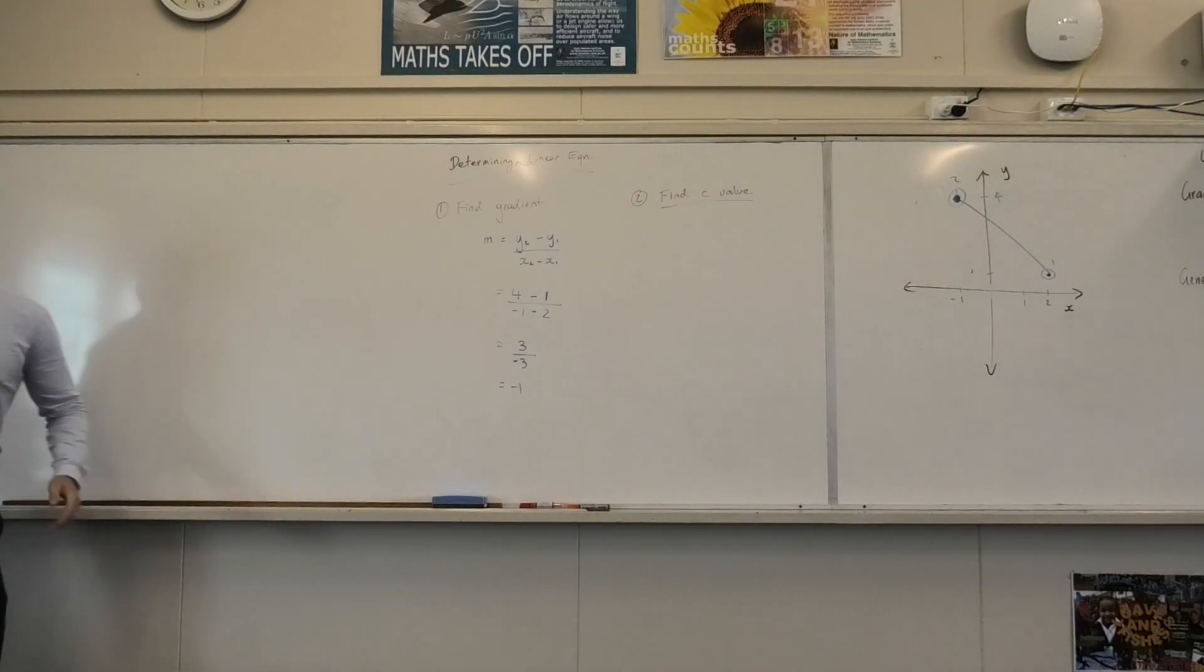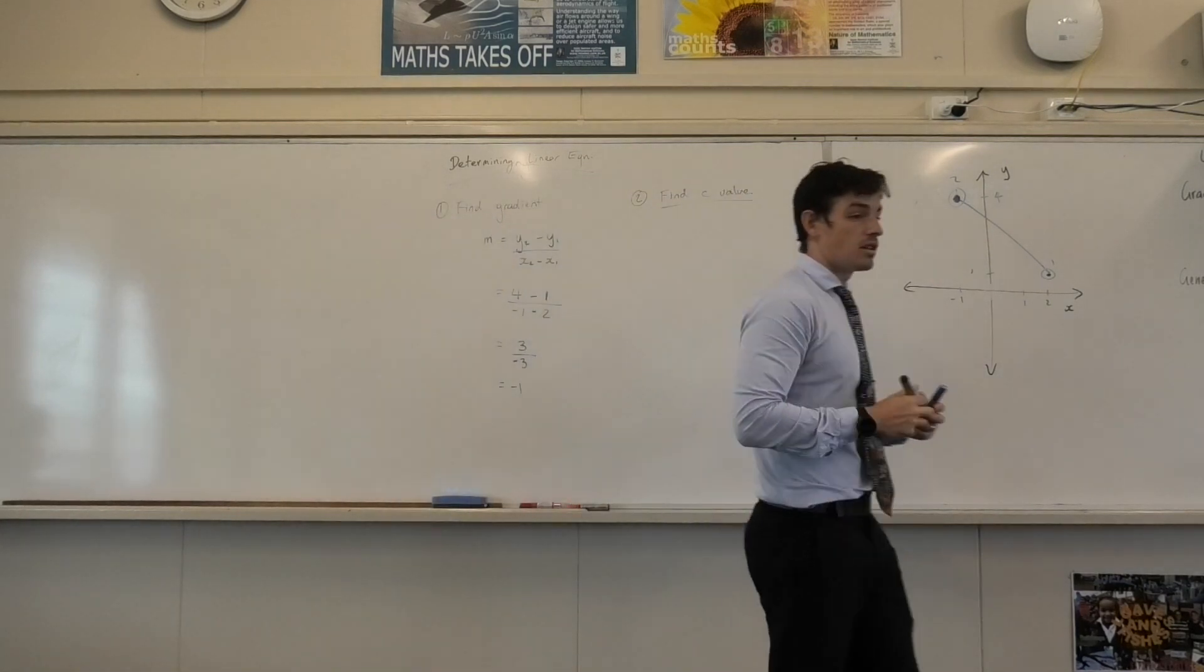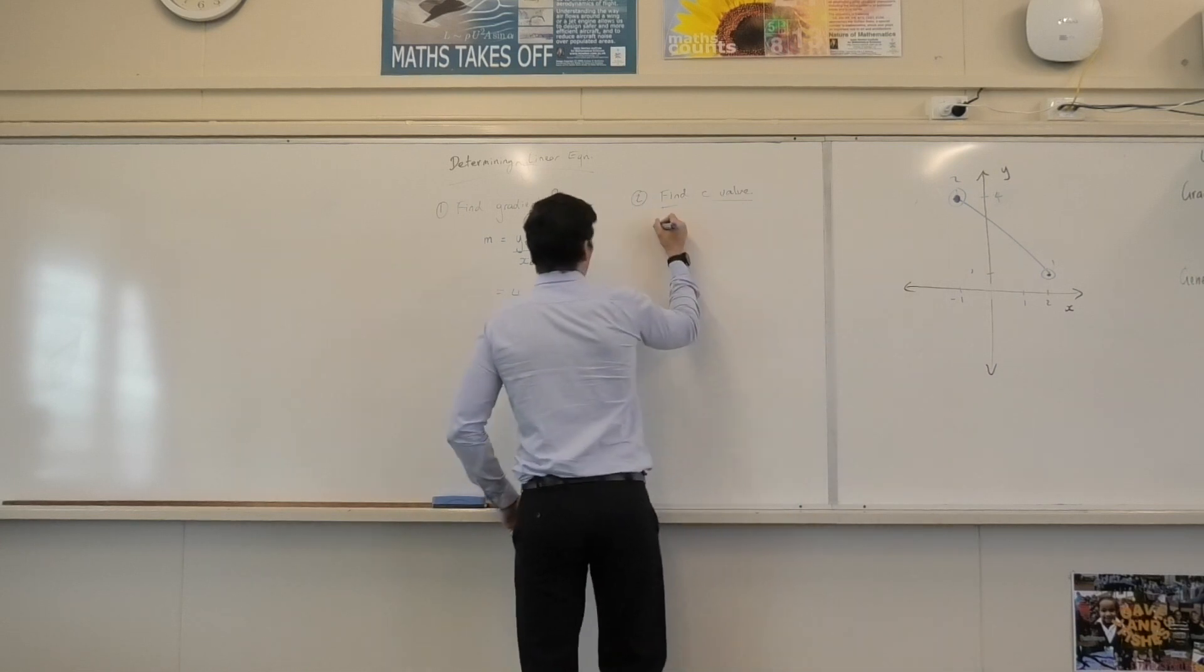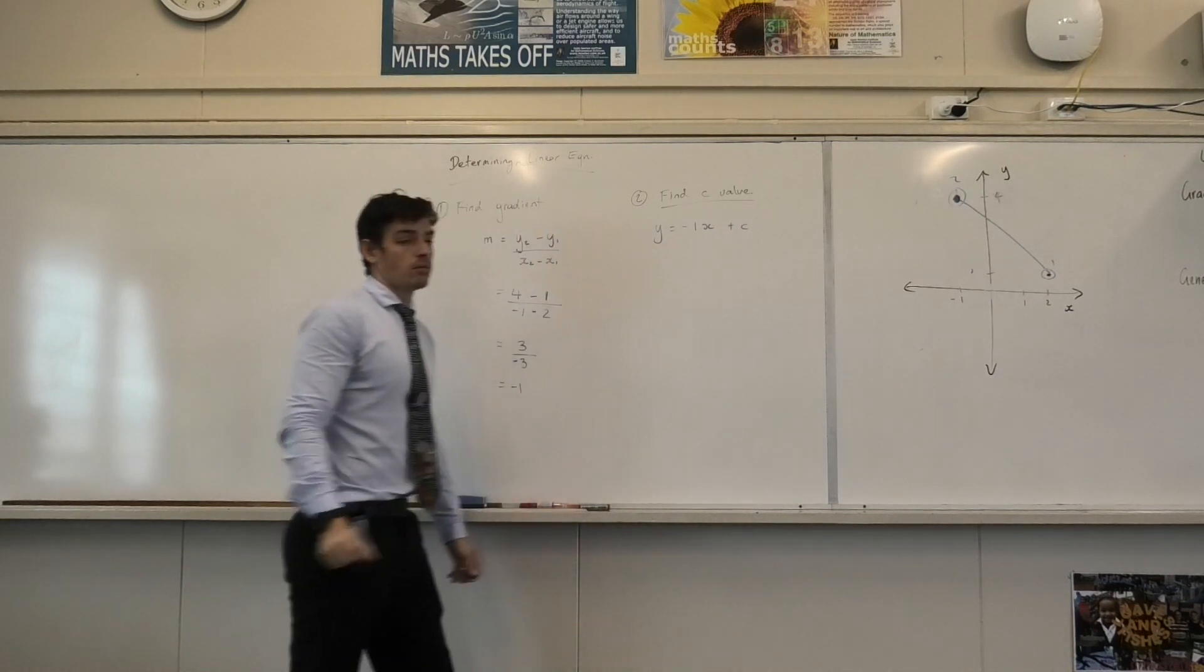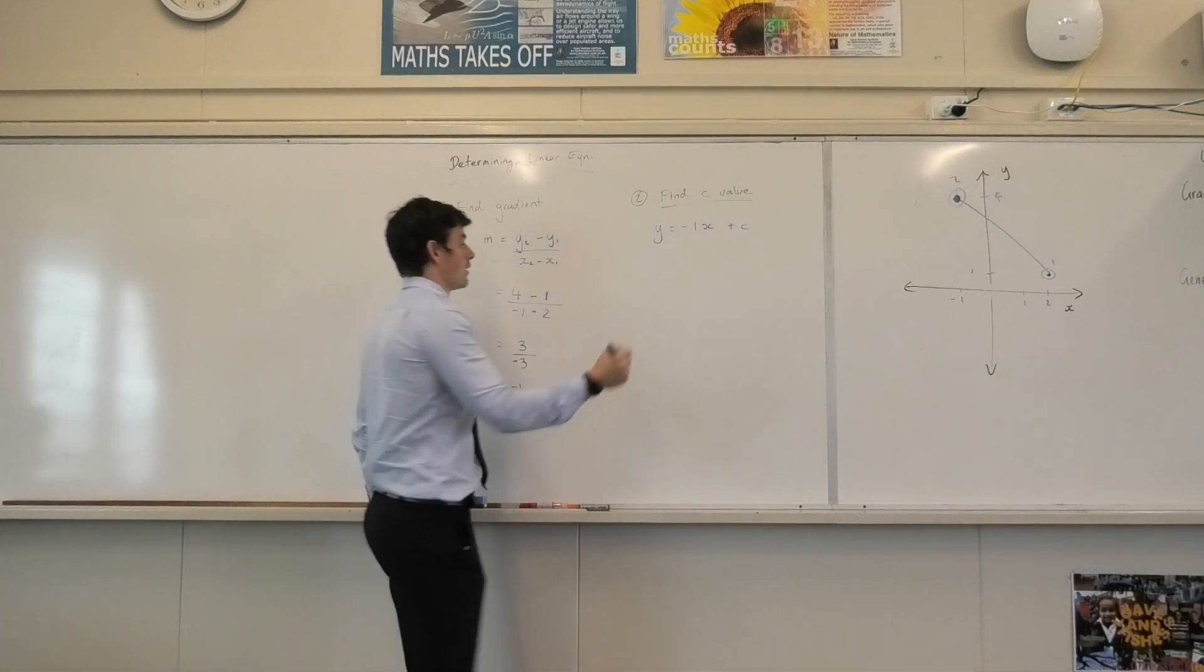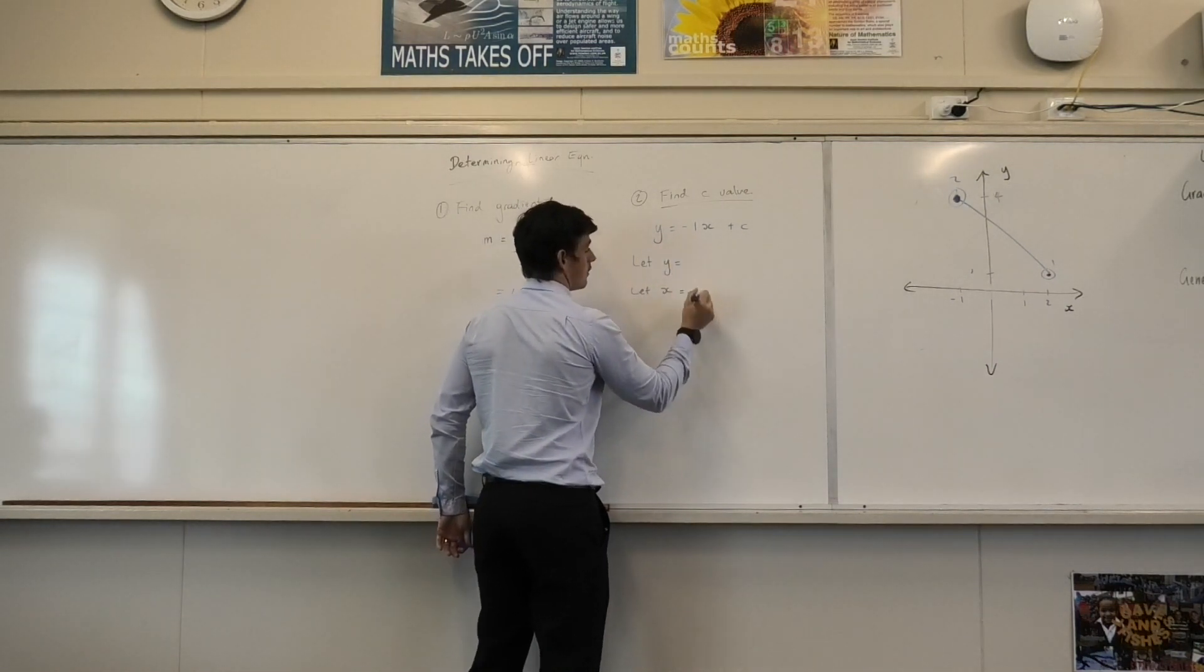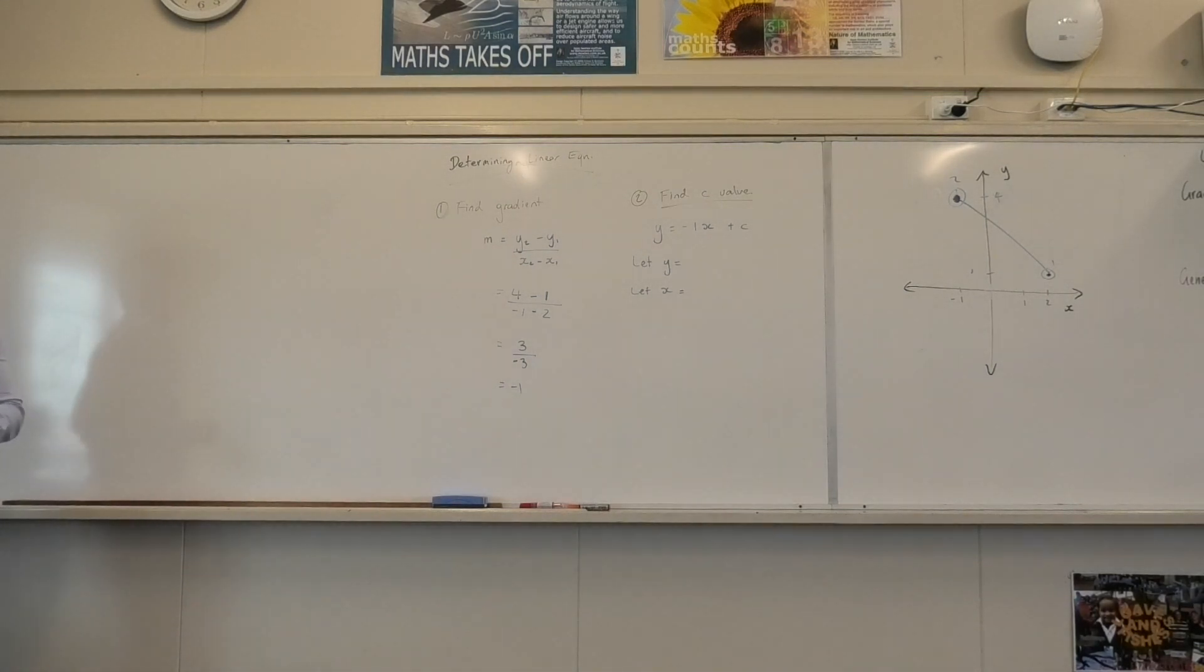What do I do if I know three things and don't know one thing? I need to rearrange to get c by itself, correct? Okay. So I'll write my equation out: y equals negative 1x plus c. What do I do? Let y equal. Let x equal. What should I let y?